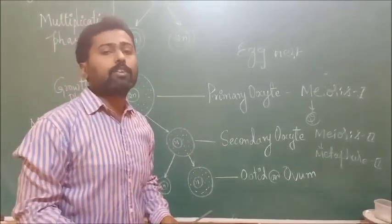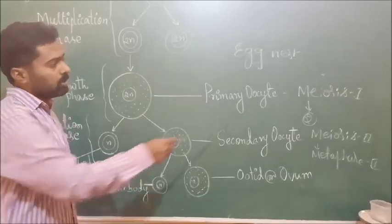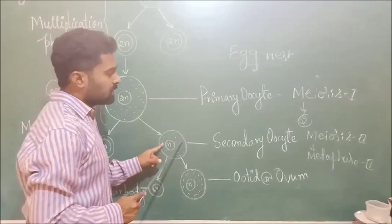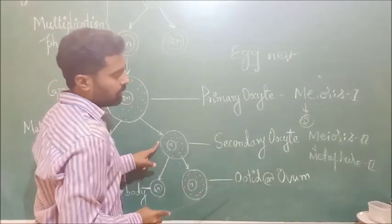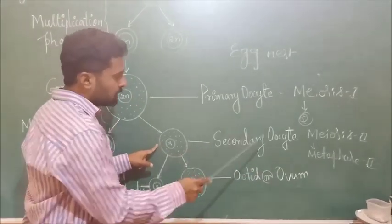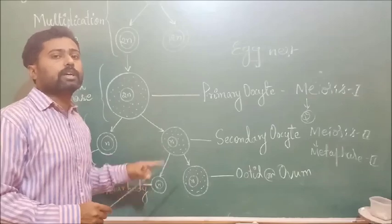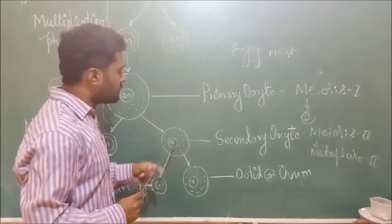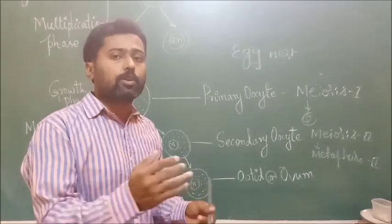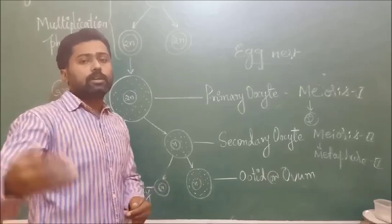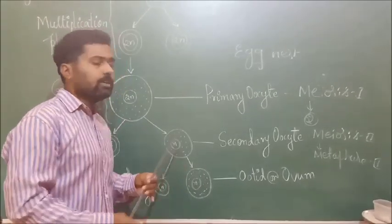A key question for competitive examinations: at which stage is the ovum released from the Graafian follicle? It is released at the secondary oocyte stage. Once the primary oocyte divides, it produces the secondary oocyte. The secondary oocyte rests at metaphase II. The further division of the secondary oocyte takes place in the fallopian tube during fertilization — only after the entry of the sperm.